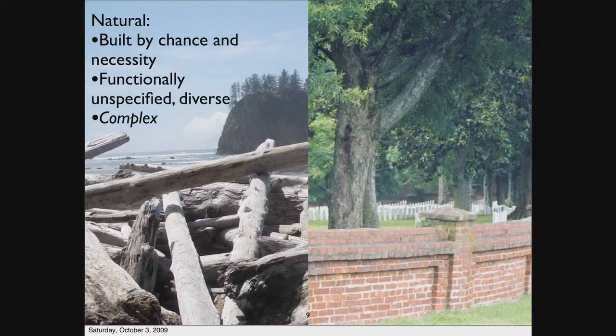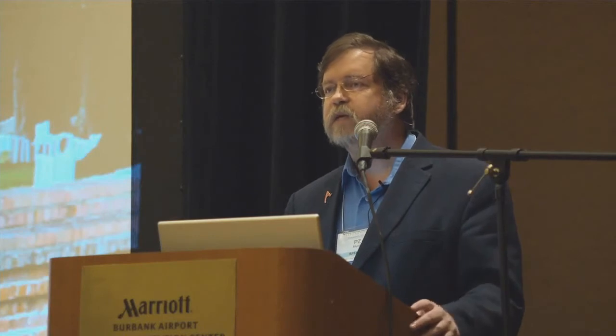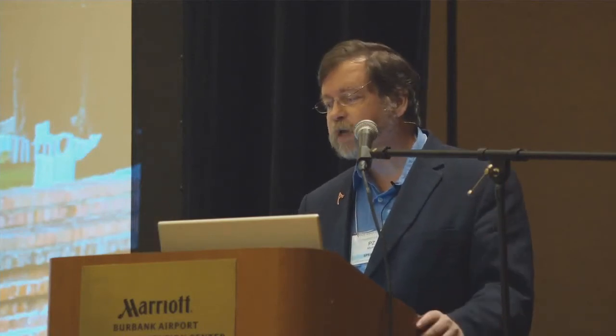So there's a difference here. When we look at natural walls, what we discover is that natural things are built by chance and necessity. They're functionally unspecified. There's nothing that says that pile of driftwood is a wall — it just functions as a wall to us. But it's also got diverse other functions. And they all tend to be complex. In this sense, complex often means sloppy. But it's still complex.